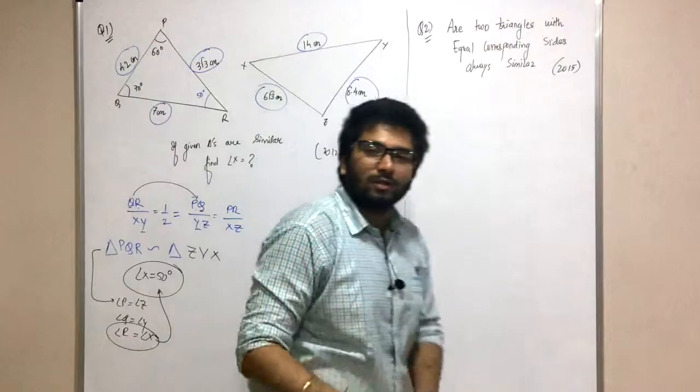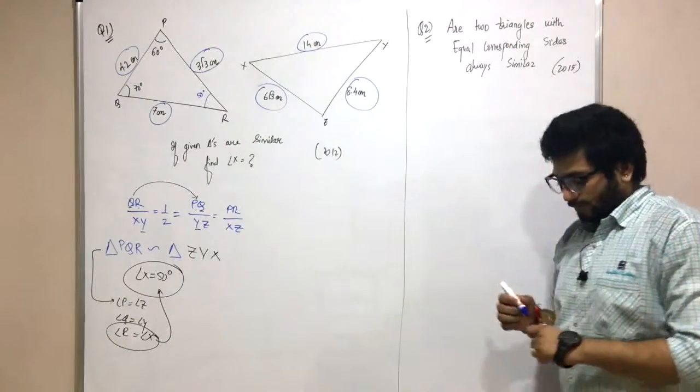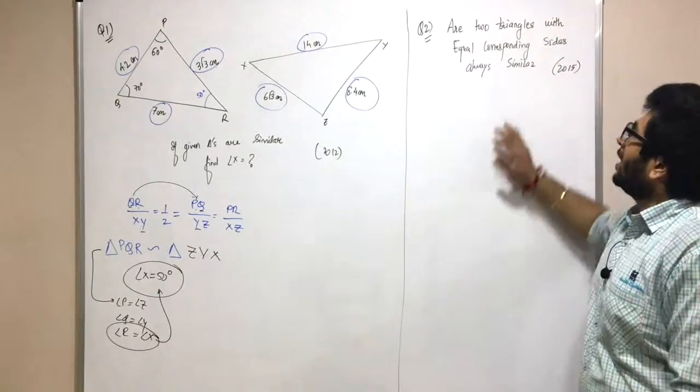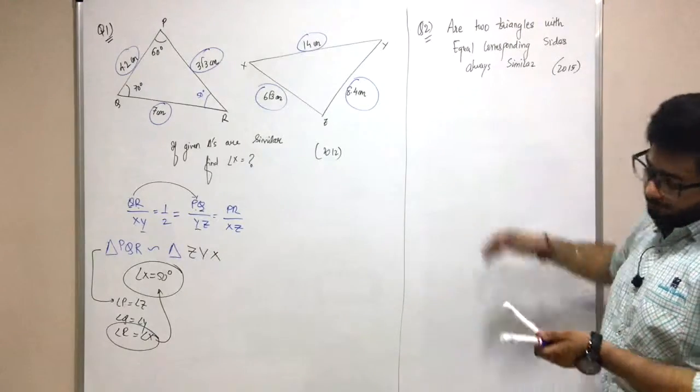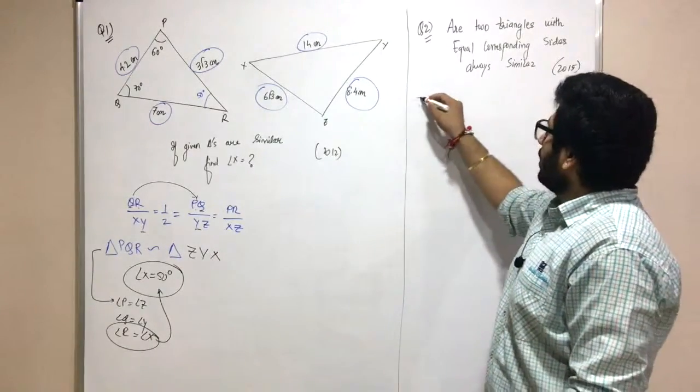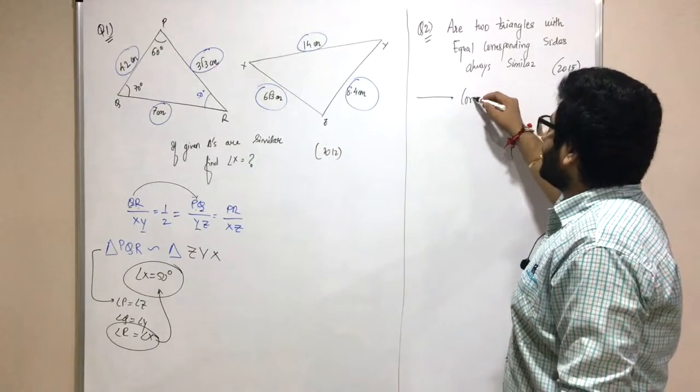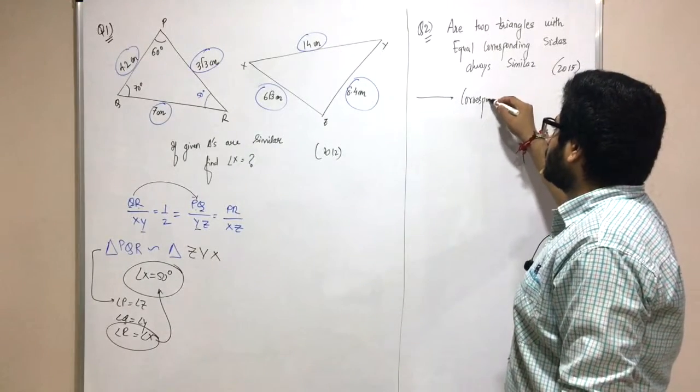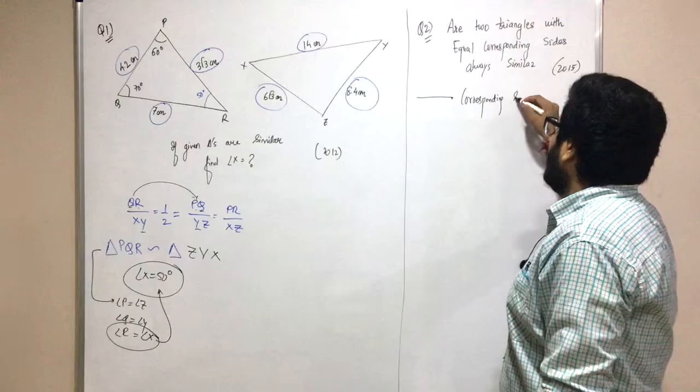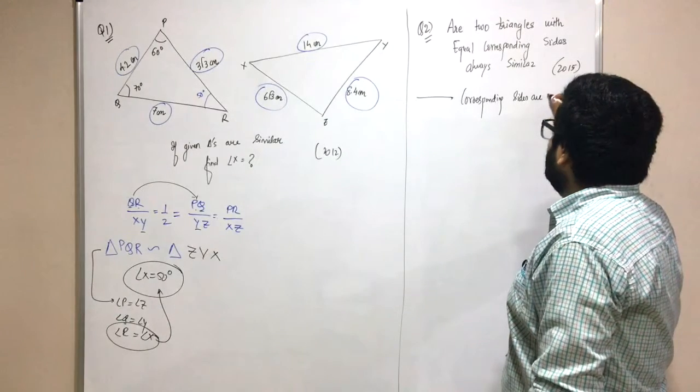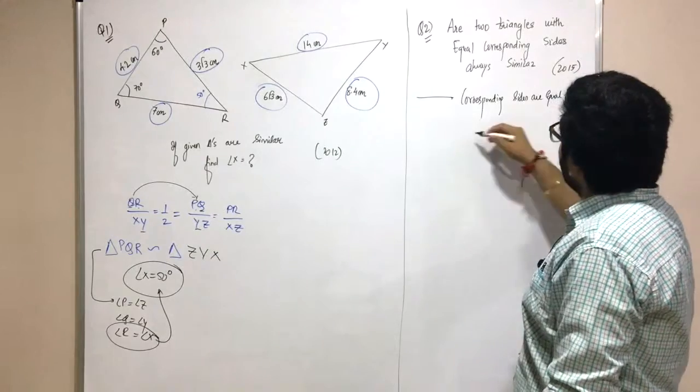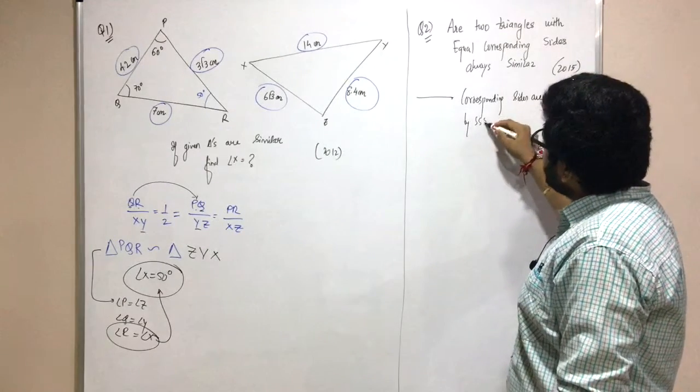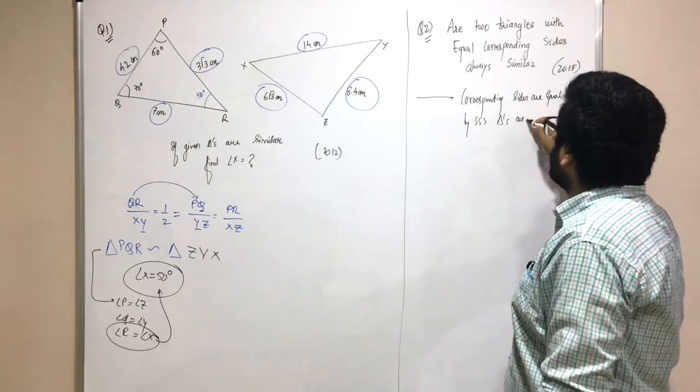Then we will go for the next question: Are two triangles with equal corresponding sides always similar? So now I'll tell you - if corresponding sides are equal, then by SSS triangles are congruent.